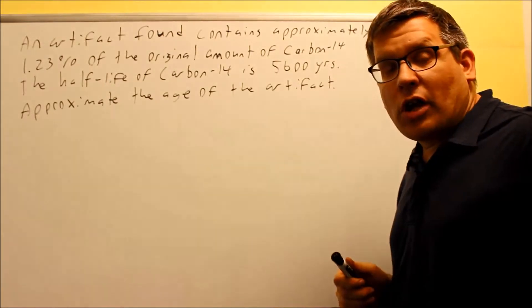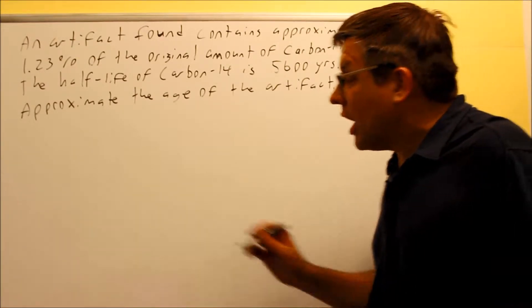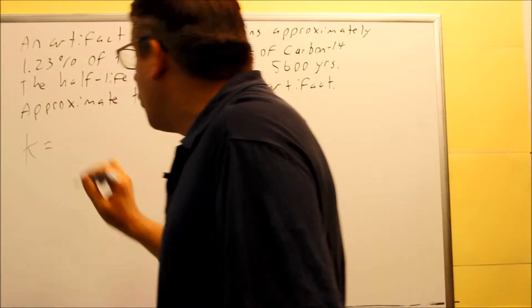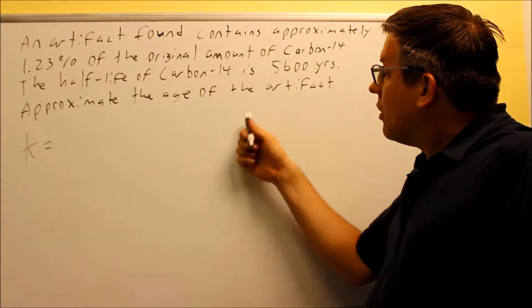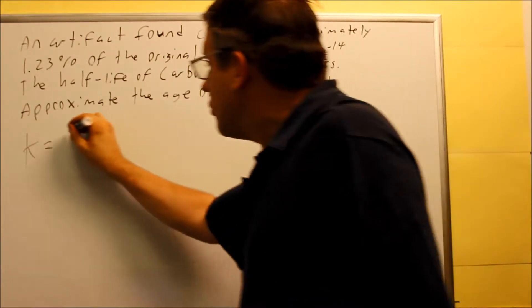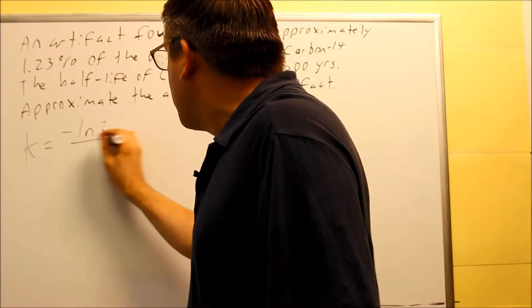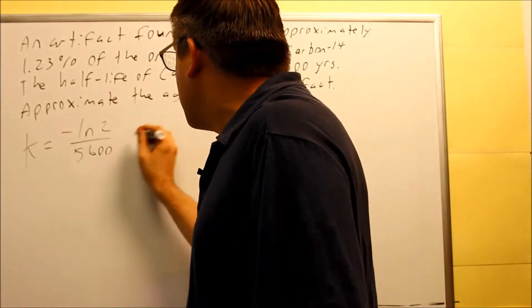So because we're still dealing with half-life, half-life has that special k-value. The k-value would be your decay constant, and we're going to use the information provided here. We're going to use 5,600 years, so we're going to do negative ln2 over 5,600 years.